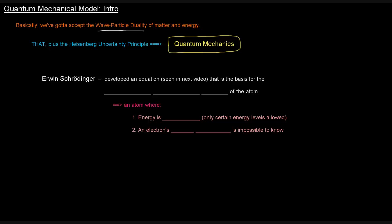There's Erwin Schrödinger, who developed an equation that we'll see in the next video. This equation is the basis for the quantum mechanical model of the atom.